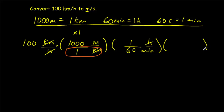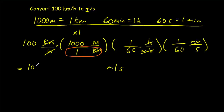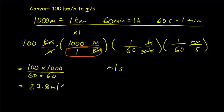In the final step, I get rid of those minutes by putting a minute in the numerator and a second in the denominator. Of course, 60 seconds has to equal one minute. So I end up with units of meters per second. Multiplying 100 times 1,000 in the numerator, then dividing by 60 twice, I get an answer of 27.8 meters per second.